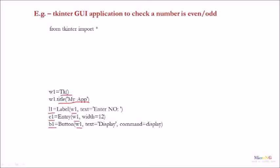And the button widget name is b1. In the button caption we are displaying the text as 'Display', and we associate a function to the button control by using the command option. Function name we have written as display.